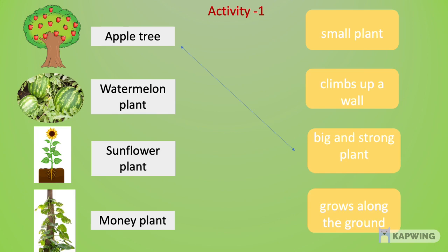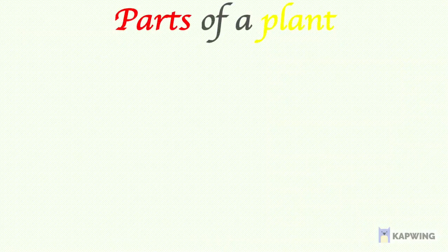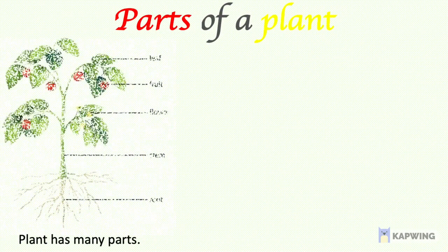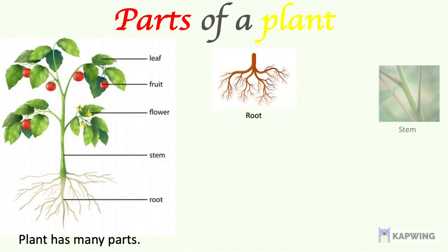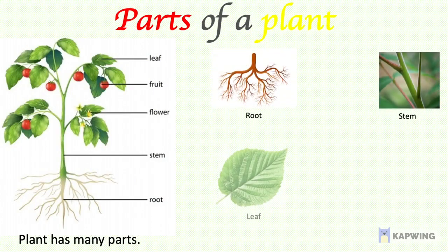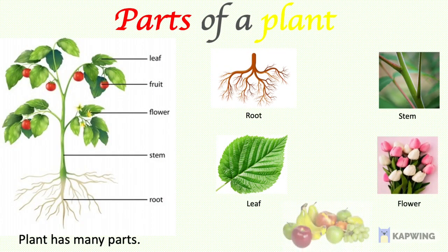An apple tree is a big and strong plant. Watermelon plant grows along the ground. Sunflower plant is a small plant, and money plant climbs up a wall. Now let us learn about the parts of a plant. A plant has many parts — root, stem, leaf, flower, and fruit.